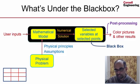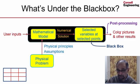Everything else is constructed from those selected variables at selected points through a process called post-processing. The color pictures are generated through the process of post-processing.